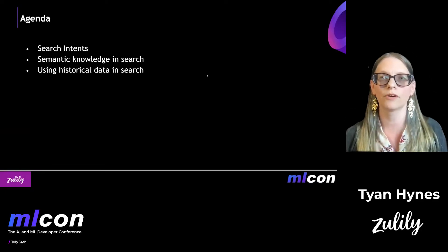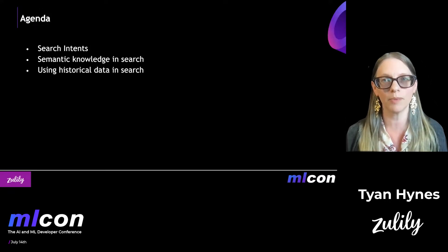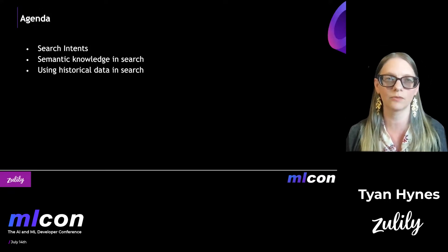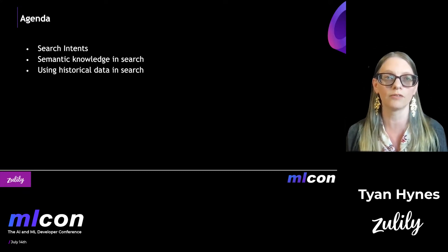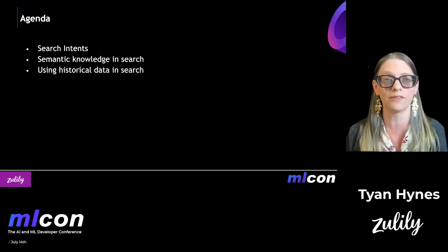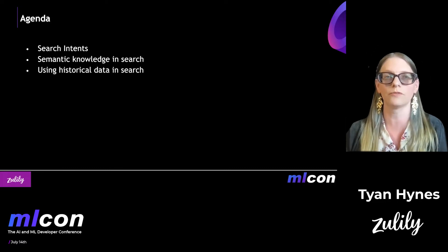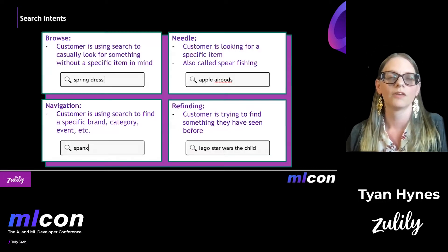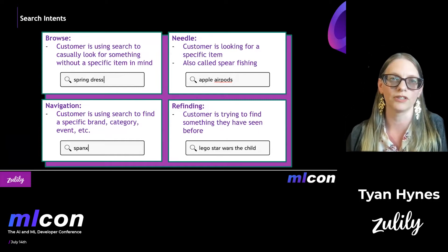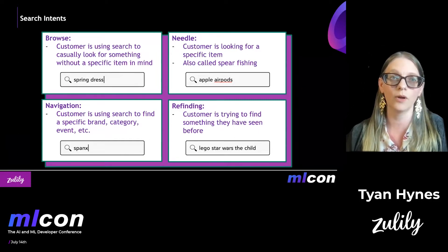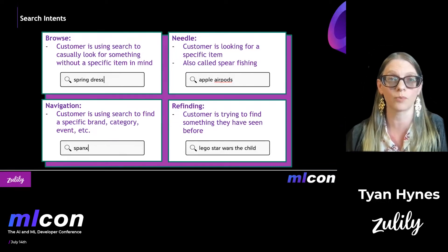Very quickly, I'm going to go over search intents and just talk a little bit about what that means and how that impacts what we might do in terms of search relevance. And then I'm going to go over two particular things we might take in search — semantic knowledge to improve search relevance, and historical data to improve search relevance as well.